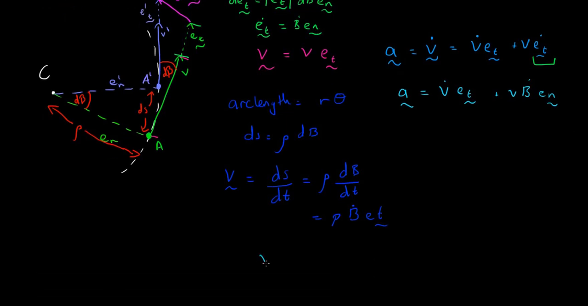But v is equal to rho beta dot. So if I rearrange this for beta dot, we end up with beta dot is equal to v over rho. I'm going to substitute this now in for this value in here. And we end up with a vector is equal to v dot in the tangential direction plus v squared over rho in the normal direction.